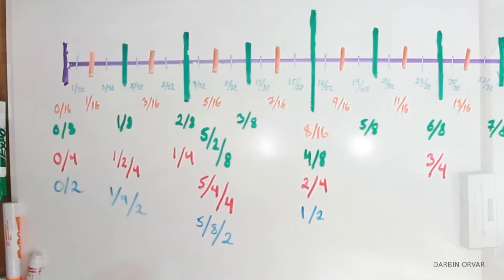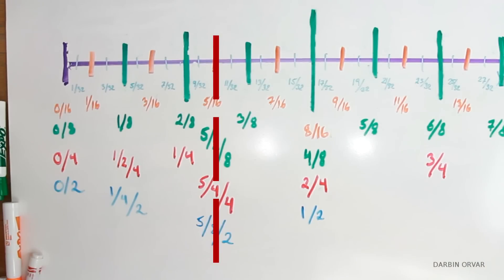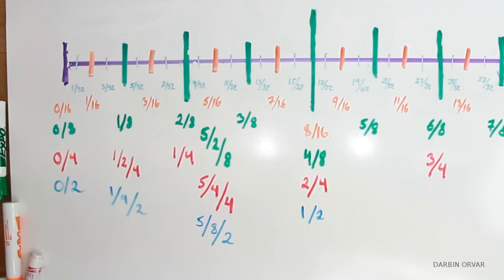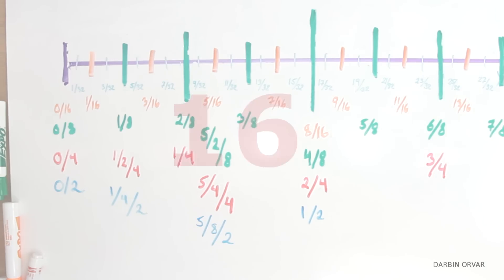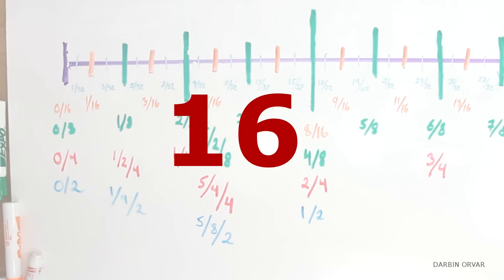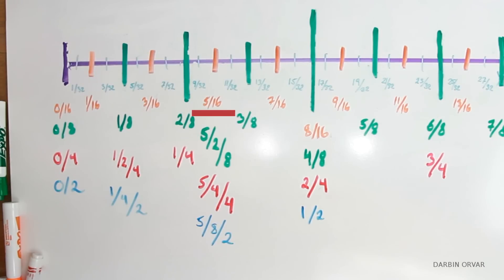And when you look at this translated line, you can see that all these numbers — 2 times 8, 4 times 4, 8 times 2 — they all equal 16. Which is why they all translate to 5 sixteenths, just written in a different way.